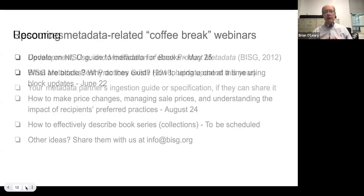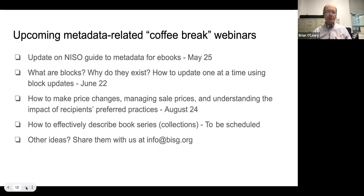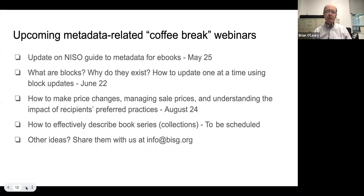This is the fifth in the series that started last September as a coffee break webinar. More are planned: a planned update on the NISO guide to metadata for ebooks in May, presented by Pat Payton and Joshua Town from the metadata committee. In June, an update on blocks and block updates — as Ralph outlined, not commonly used right now but a potential way to reduce demand on recipients. In August, making price changes and managing sale prices. If you have ideas for things you'd love to hear discussed, share them at info@bisg.org.